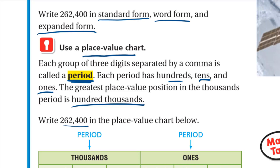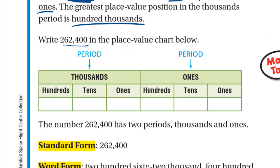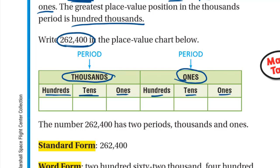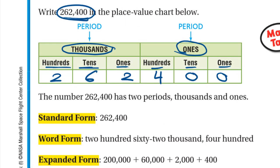We will write 262,400 in the place value chart. The ones period consists of ones, tens, and hundreds. The thousands period consists of ones (thousands), tens (ten thousands), and hundreds (hundred thousands). To place 262,400 in the chart, we start from the right — from the ones — and write 0, 0, 4, 2, 6, 2.